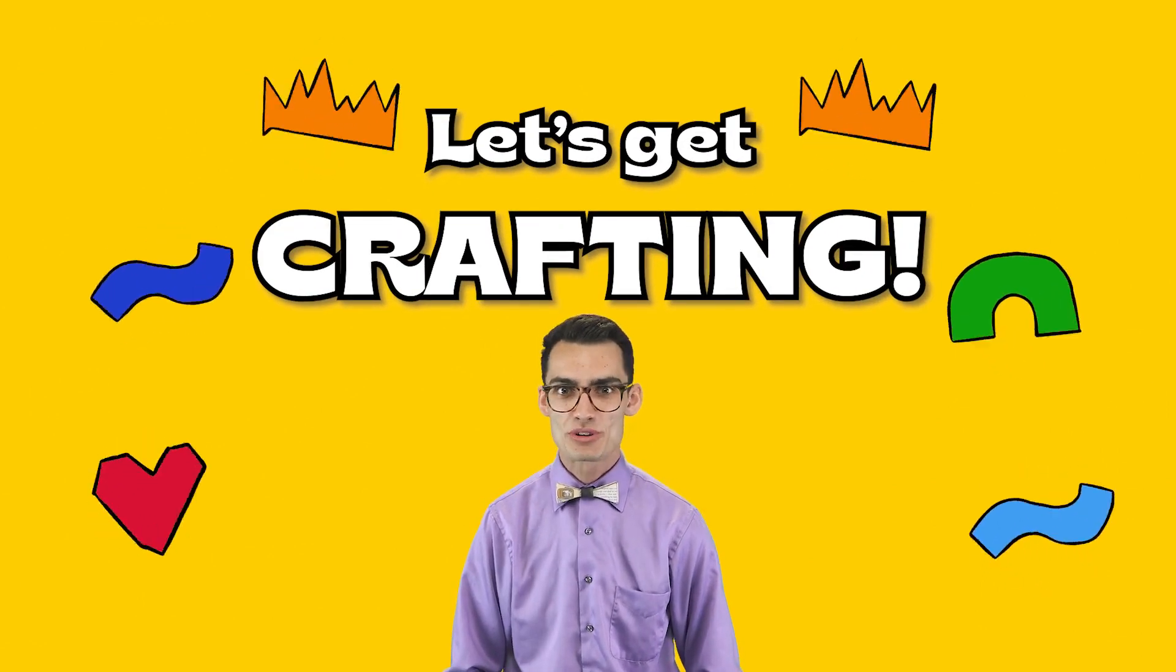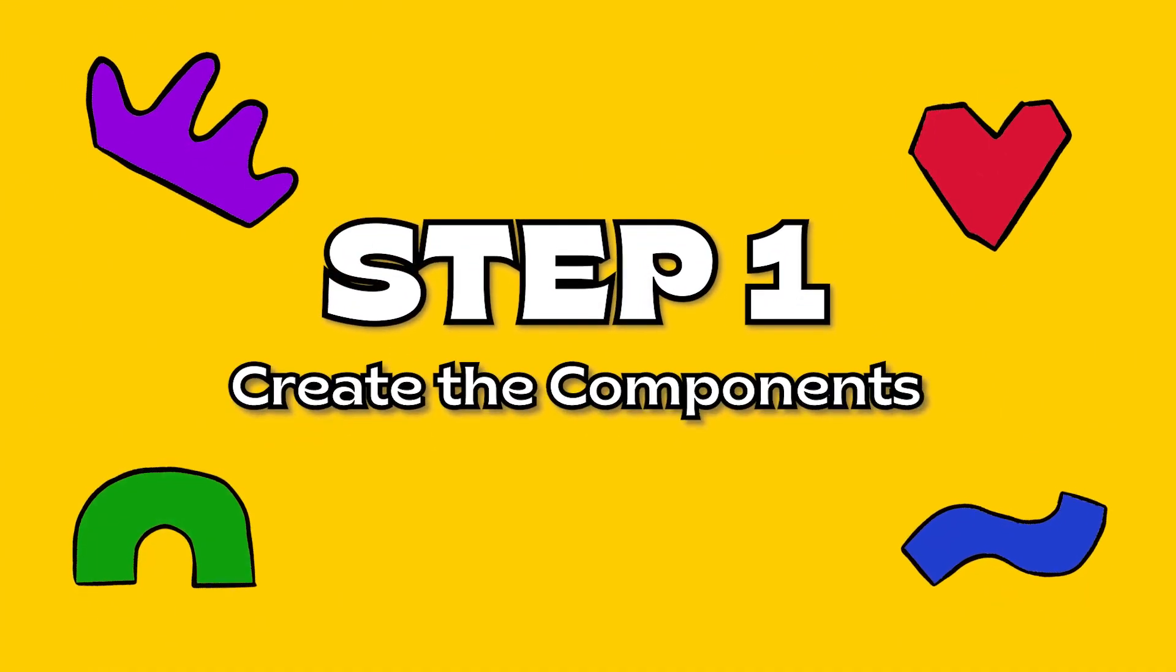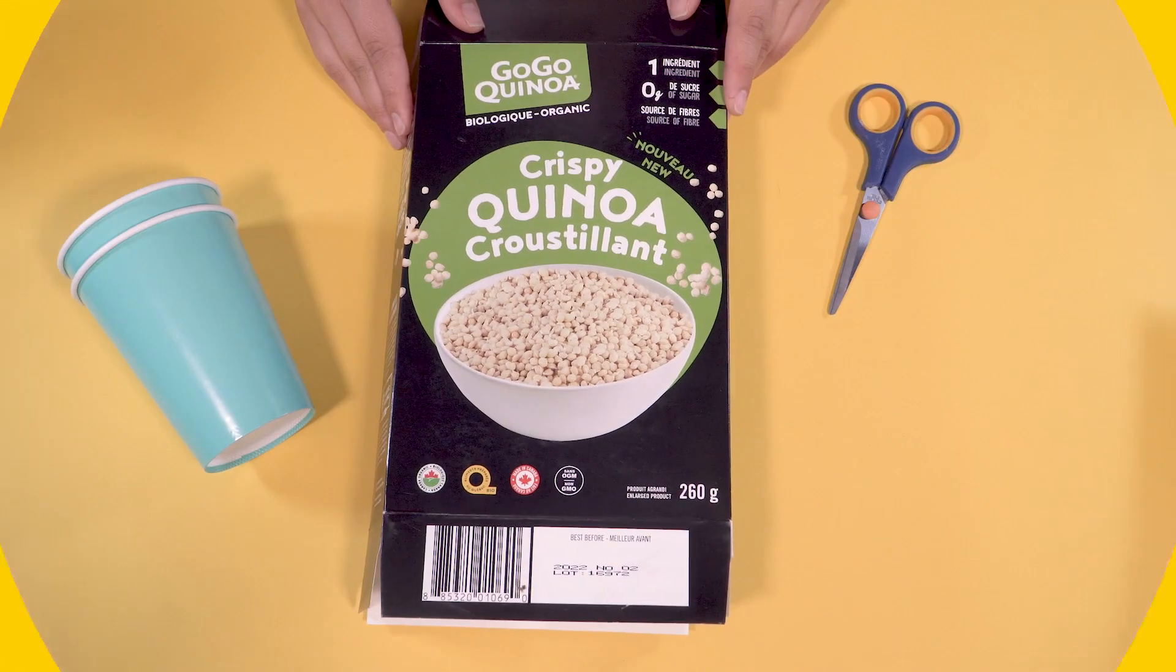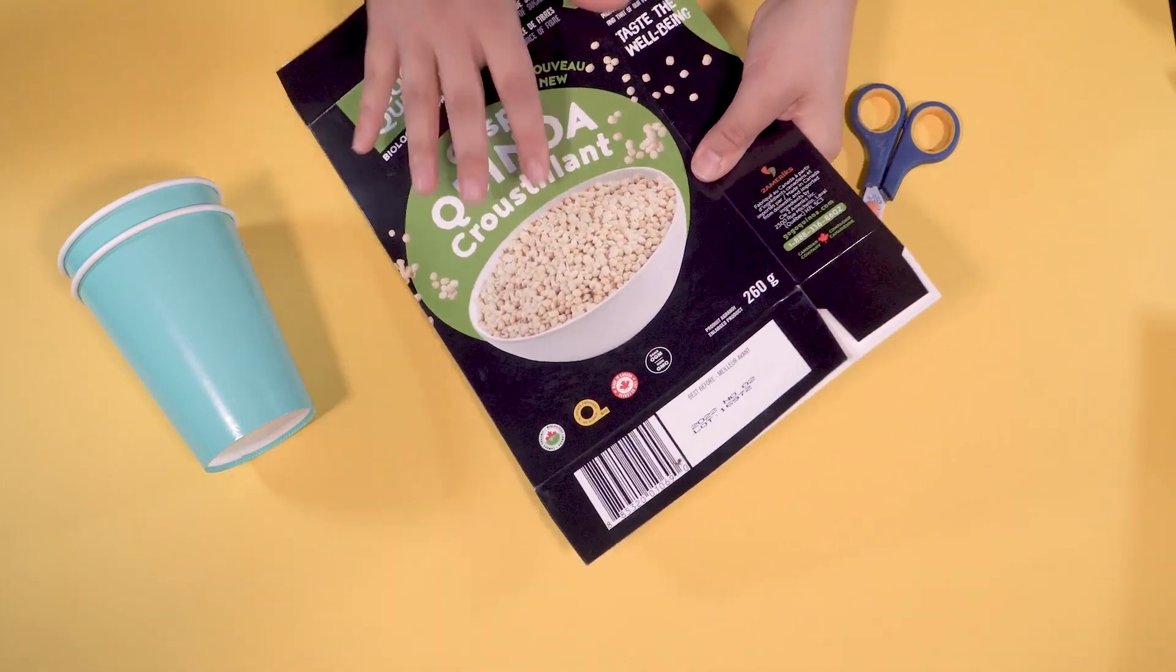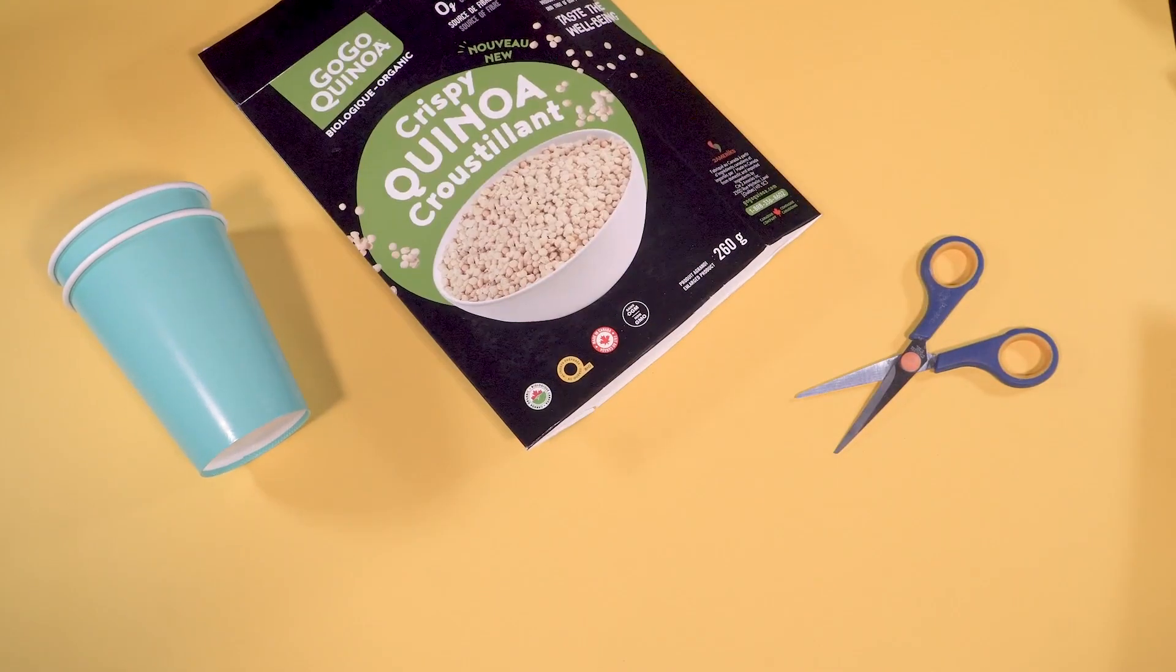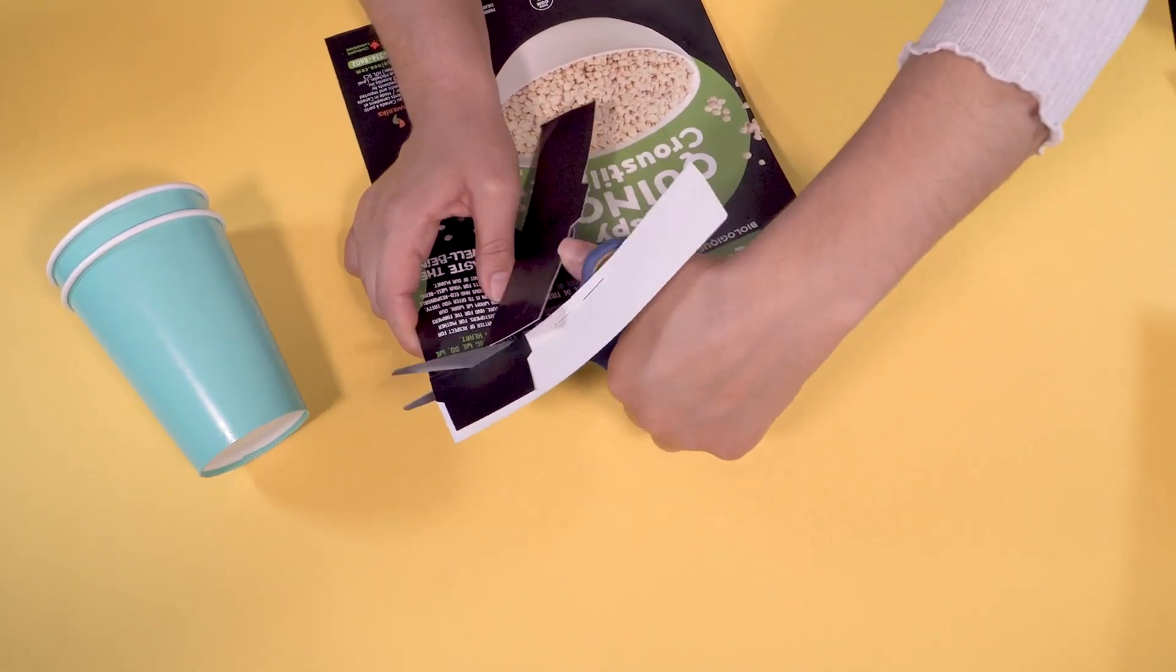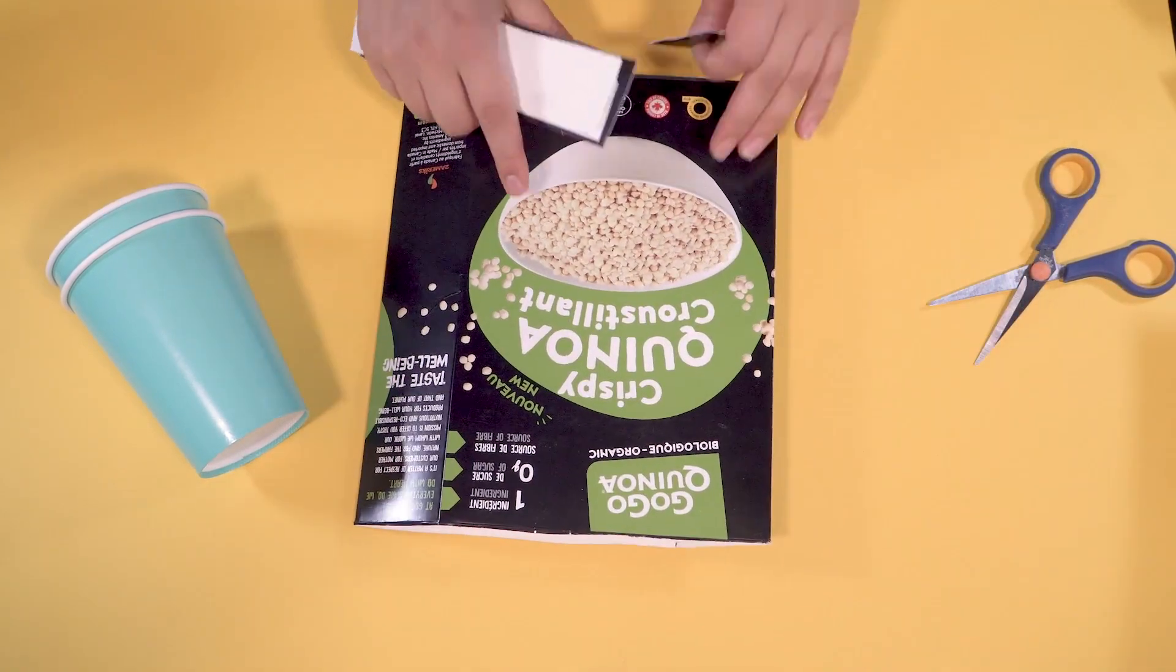All right. There's no time to lose. Grab your cereal box. Cut it along the edge so that it is now a flat piece of cardboard. Cut off the excess pieces so you just have a rectangle. This will be the base for your jetpack.